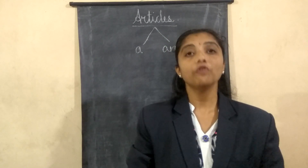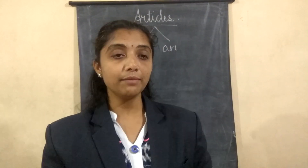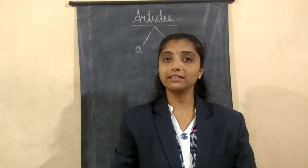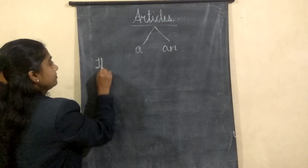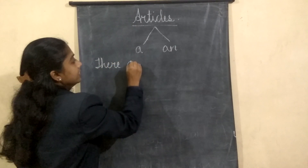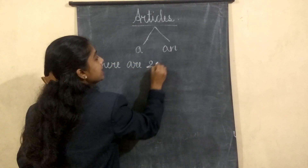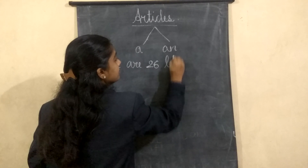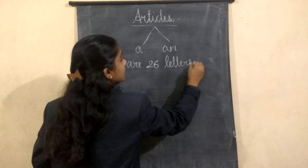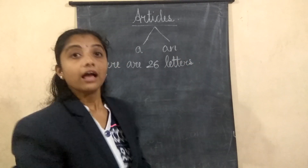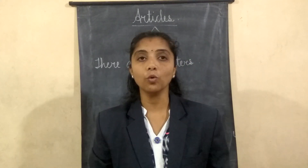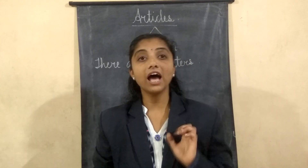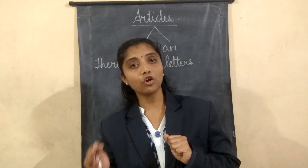Okay children, now let's start. Can you tell me how many letters are there in English? Yes, there are 26 letters. And from these 26 letters, as you all know, they are vowels and consonants.